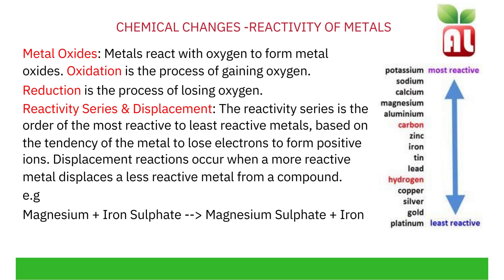Knowledge of the reactivity series helps with understanding where we obtain metals. Metals are useful substances in day-to-day life and we need to know where we get them from. Metals are found in ores, which are rocks that contain metal compounds. We extract the ore from the ground, remove the rock, and follow a series of extraction processes to separate the metal from the compound. This can be done by either displacement with carbon or a more reactive metal, or by the process of electrolysis, which is used for those metals more reactive than carbon.